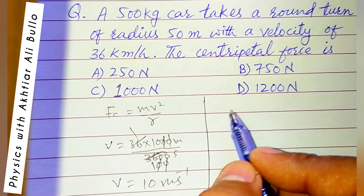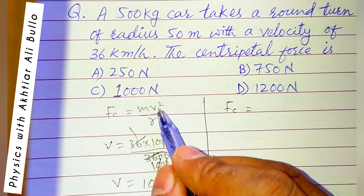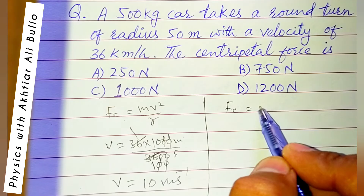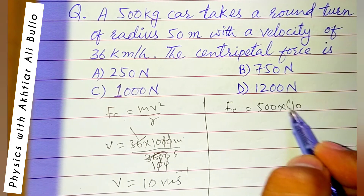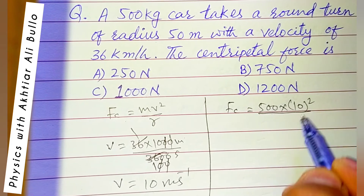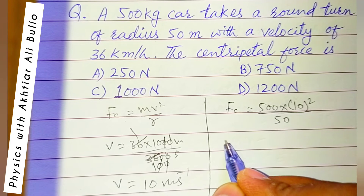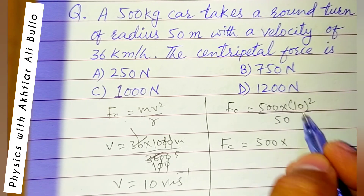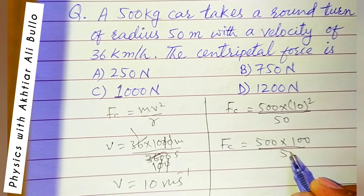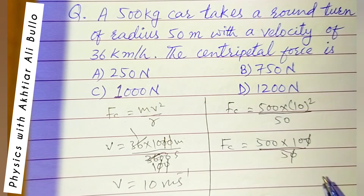Now we calculate centripetal force. Centripetal force equals mv² divided by R. Mass is 500 kg, V is 10 m/s, so V² is 100, and R is 50 meters. The 50 and one zero from 100 cancel.